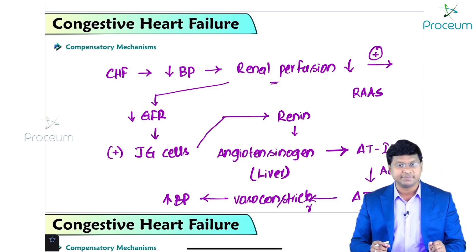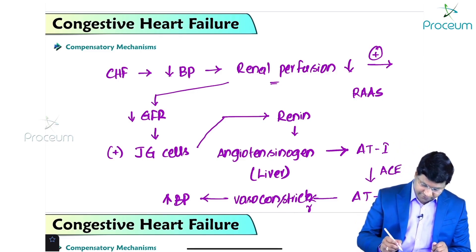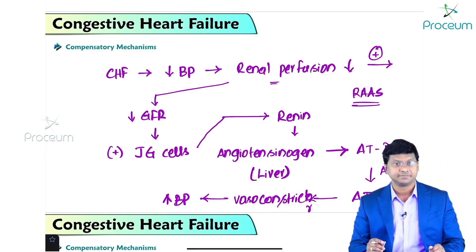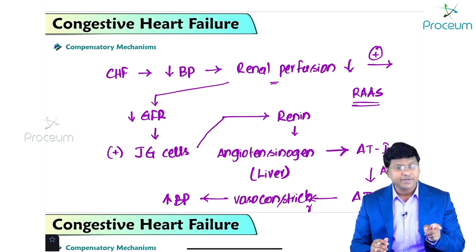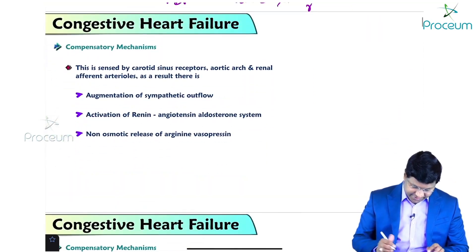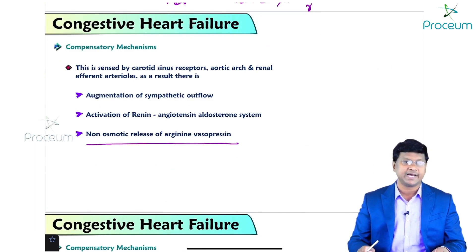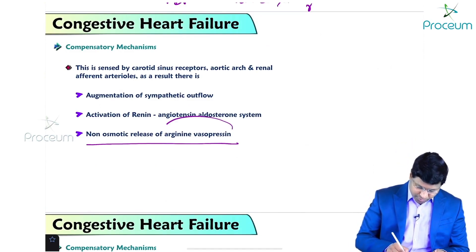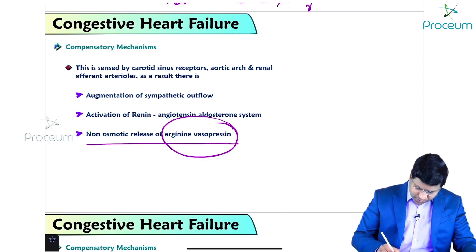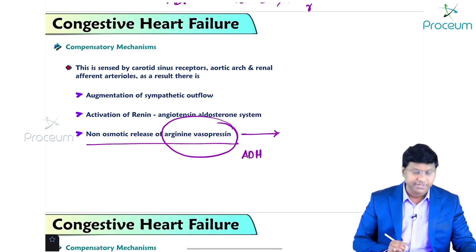Angiotensin 2, being a potent vasoconstrictor, causes an increase in blood pressure. That is the second compensatory mechanism — activation of the renin-angiotensin-aldosterone system. The third compensatory mechanism is the non-osmotic release of arginine vasopressin, which is also called antidiuretic hormone.